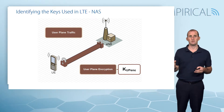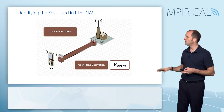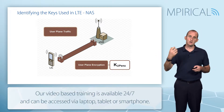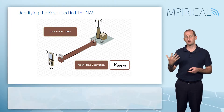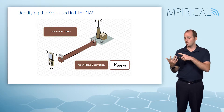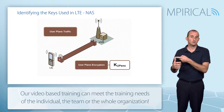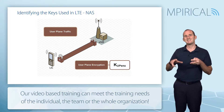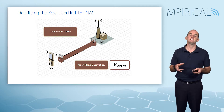Finally, we've got user plane traffic to be protected as well. We don't integrity check our user plane traffic — it is simply encrypted — so we need one more key. That's five keys in total: two keys for NAS (encryption and integrity checking), two keys for RRC (encryption and integrity checking), and one key for user plane encryption.